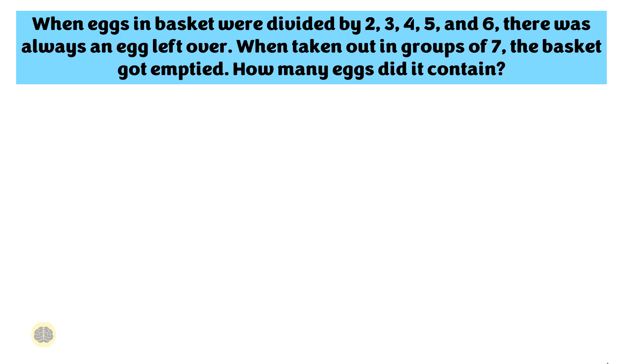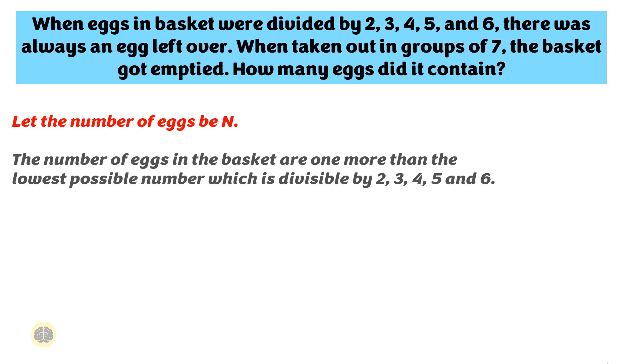Let me explain the solution now. Let the number of eggs be N. The question says that when the eggs are taken out in groups of 2, 3, 4, 5, 6, there is always an egg left over.